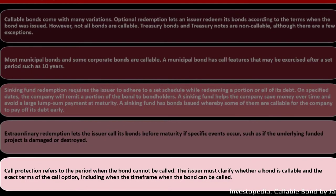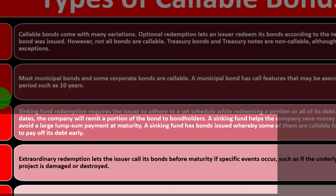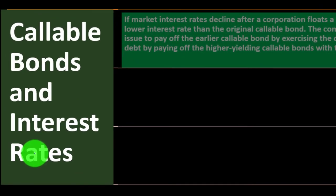Extraordinary redemption lets the issuer call its bonds before maturity if specific events occur, such as if the underlying funded project is damaged or destroyed. Call protection refers to the period when the bond cannot be called, and the issuer must clarify the exact terms of the call option, including when the bond can be called.